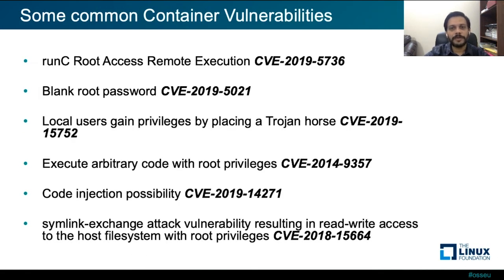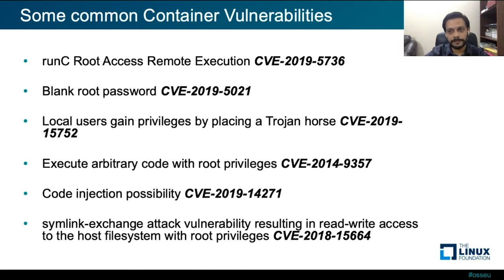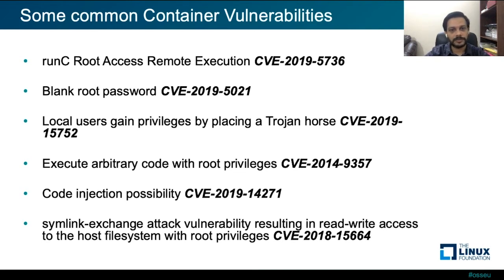Here are some examples of container vulnerabilities with their CVE numbers. CVE-2019-5736 allows a malicious container to override the host runc binary and gain root level code execution on the host — enabling container escape and access to the host file system. This has been patched. Another CVE, 2019-5021, is an issue related to the use of blank passwords for root accounts in the Alpine Linux Docker images.